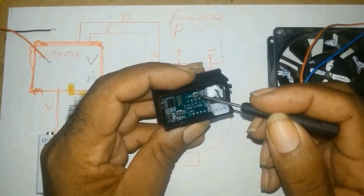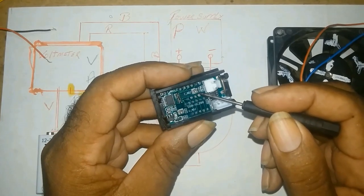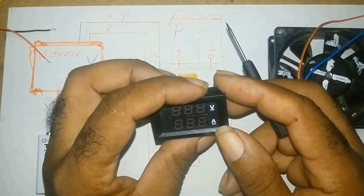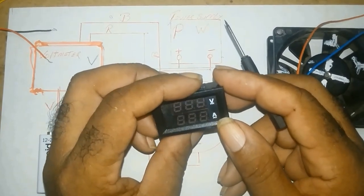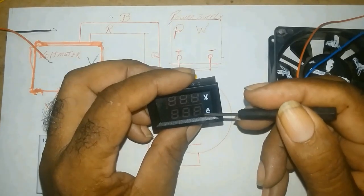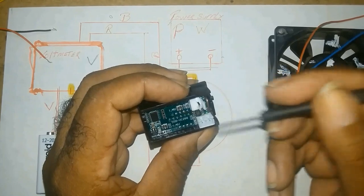This here is the amperage port. If you know what amps whatever you're working with draws and you notice it doesn't match here, then you calibrate it here.